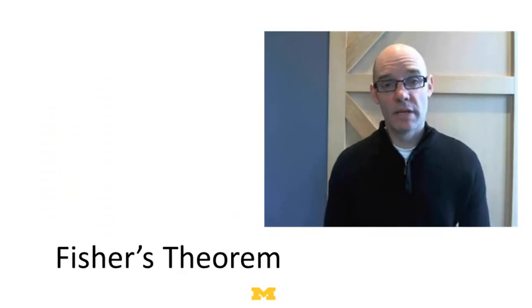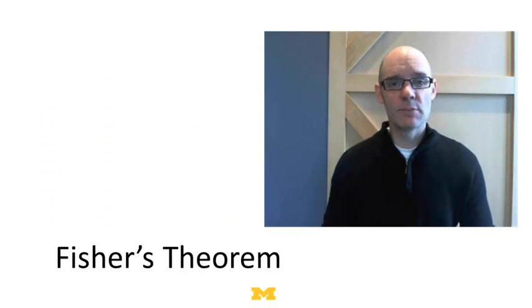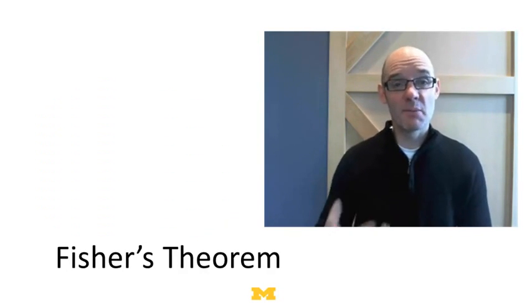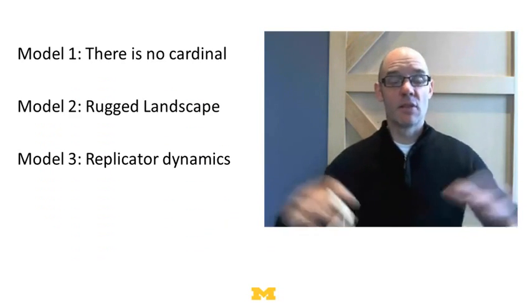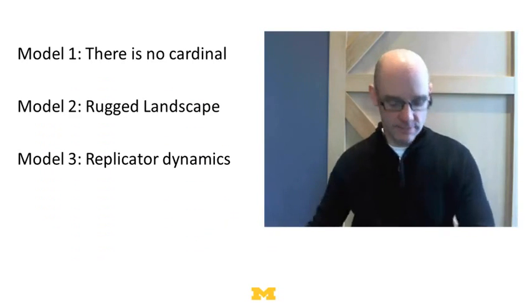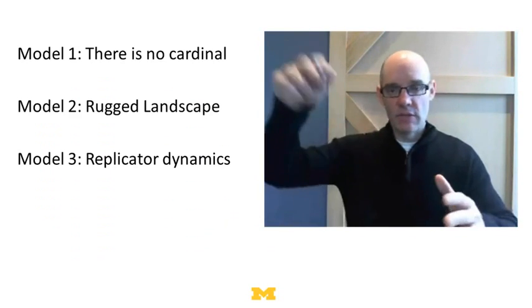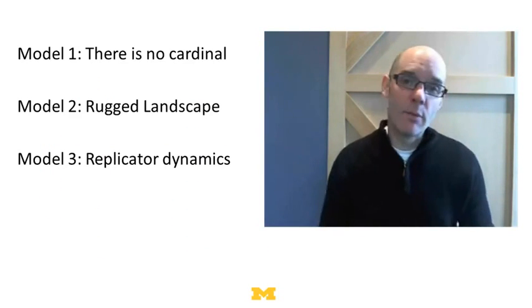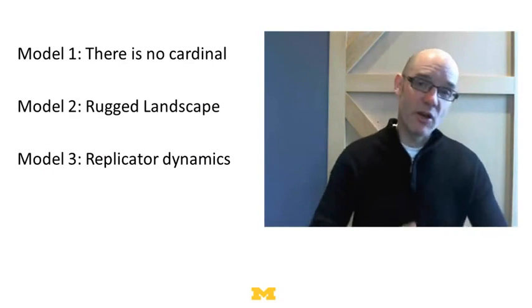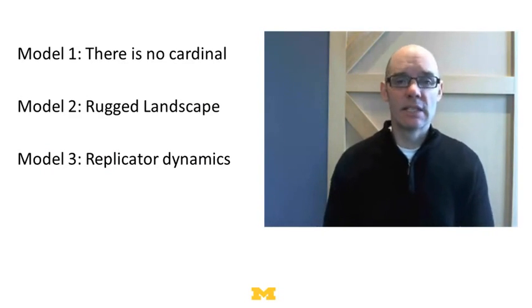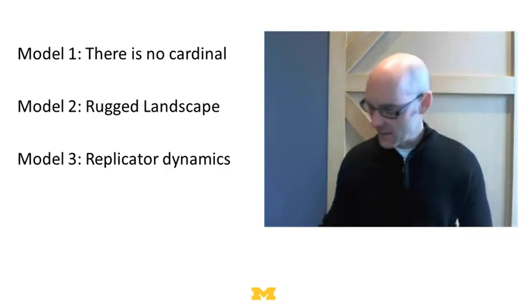I want to use replicator dynamics and the fitness wheel idea to explain Fisher's fundamental theorem. Fisher's theorem is going to be really interesting because it allows us to combine a bunch of models we've already used: the model that said there is no cardinal — meaning there's a lot of variation within a species — second, the model of rugged landscapes, and third, replicator dynamics. Fisher's fundamental theorem combines all of these to give us an insight about the role variation plays in adaptation.